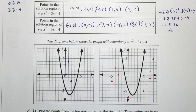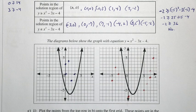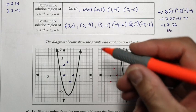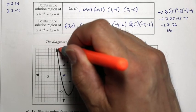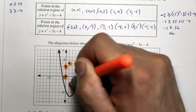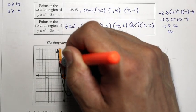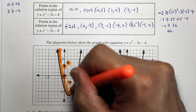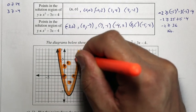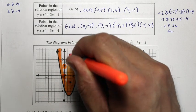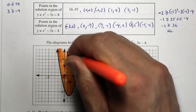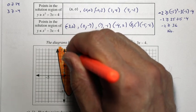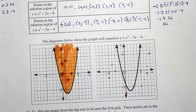Now, once we have these points, we can shade the region for the inequality y is greater than x squared minus 3x minus 4 on the first grid using an orange highlighter. We start adding these points and we can see this solid line. The shaded region continues going up and up, and you can see it there.